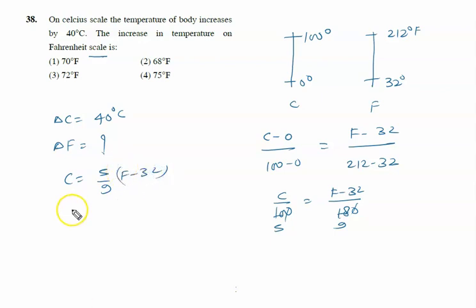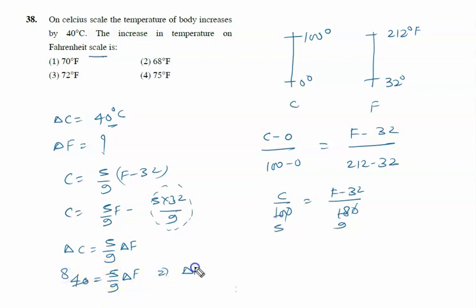Further we will write C equal to 5 by 9 F minus 5 into 32 upon 9. Now take differentiation, then you will get the answer. The option 3, that is 72 degree Fahrenheit.